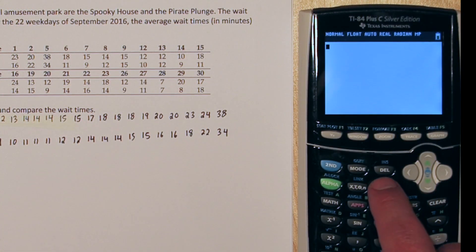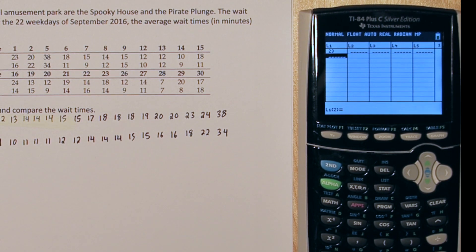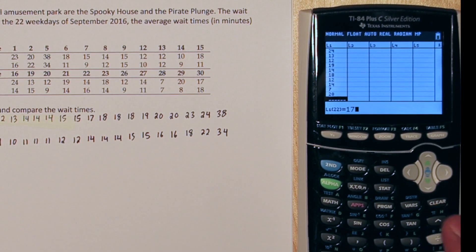If you press STAT on your calculator and then ENTER, these are called lists. Next we're going to type all the spooky house waiting times into list 1. Now push the over button to get to list 2 and type all the Pirate Plunge waiting times.